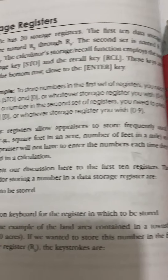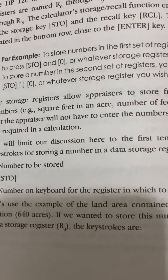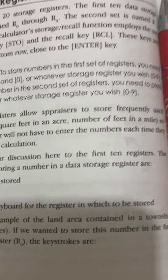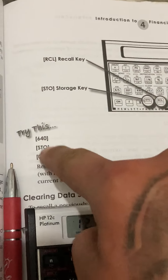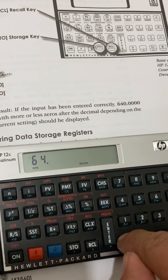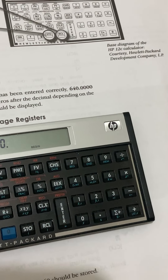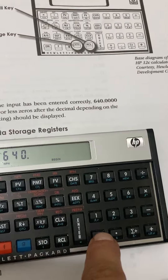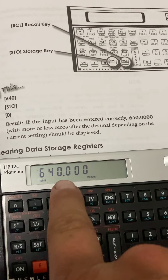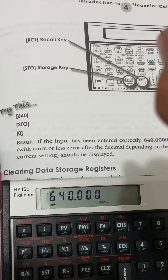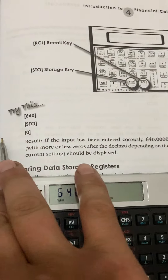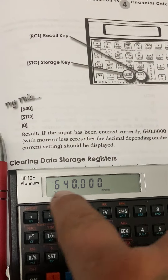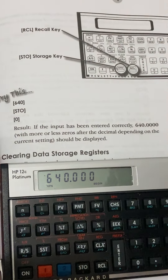Let's use the example of the land area in a township section — 640 acres. To store this in data storage register R-zero, the keystrokes are: press 640, then STO, then 0. Once you press that, some zeros should pop up confirming the data was entered. Results: 640.000 should be displayed.